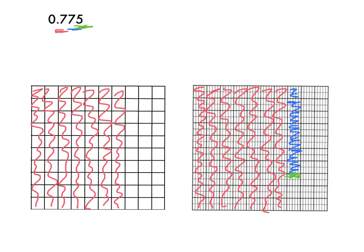Then I had seven-hundredths — one, two, three, four, five, six, seven. And then I have five-thousandths. I can't see that there are ten little rectangles inside of these squares, but they're there. So if I think about that, I'm shading in about half of that square. And again, they are exactly the same. This is seven-hundred-seventy-five-thousandths, and this is also representing seven-hundred-seventy-five-thousandths.